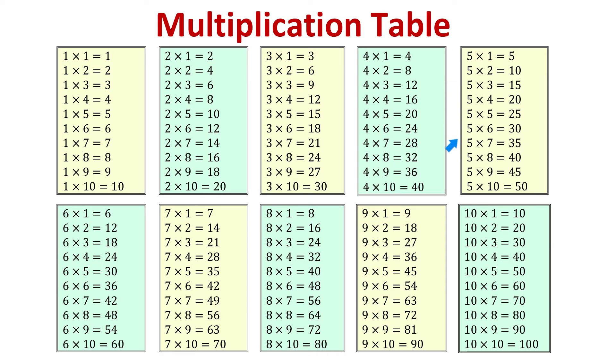Multiplication by 5 is easier because each product either ends in 0 or in 5. When we count by 5, we get 5, 10, 15, 20, 25, 30, and so on.